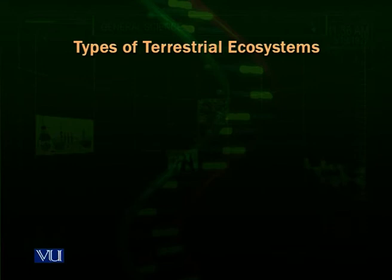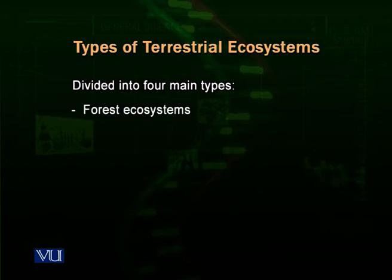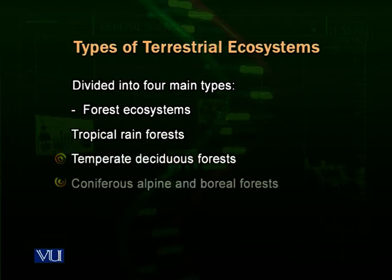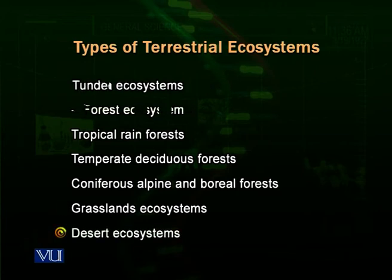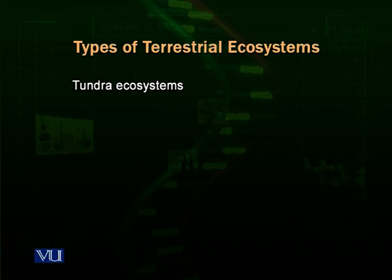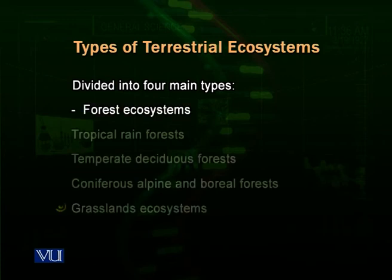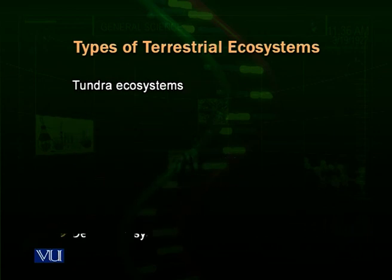Terrestrial ecosystems are divided into four major categories throughout the world: forest ecosystems, which are further divided into tropical rain forests, temperate deciduous forests, and coniferous, alpine, and boreal forests; grassland ecosystems; desert ecosystems; and tundra, which are very cold ecosystems.